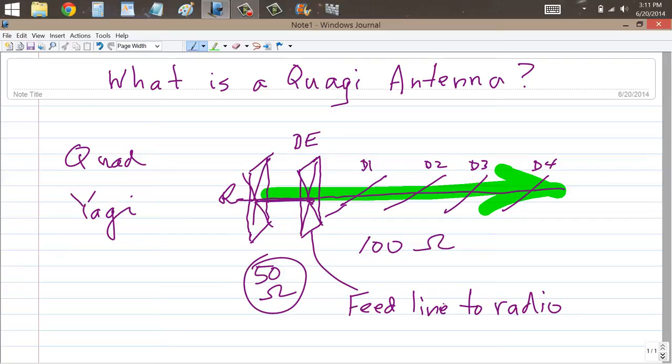Another advantage of a quad over a Yagi is that there's a broader bandwidth. You get a wider range of frequencies over which this thing will have a relatively reasonable standing wave ratio as compared to a Yagi antenna.